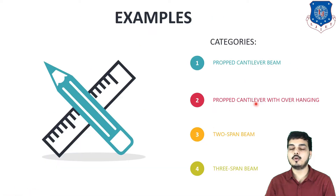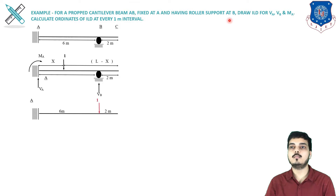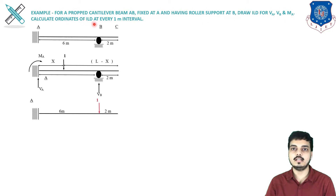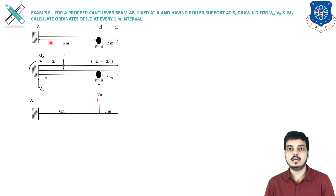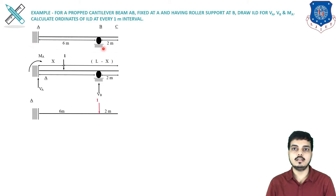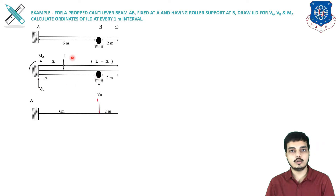In today's session we are considering a prop cantilever beam with an overhang. For a prop cantilever beam AB, fixed at A and having a roller support at B, draw the ILD for VA, VB, and MA, and calculate ordinates of the ILD at every 1 meter interval — similar to the previous session but with an overhang. Fixed at A, roller at B, and C is the overhang. A to B is 6 meters and B to C is 2 meters. We assume a unit load at distance x.